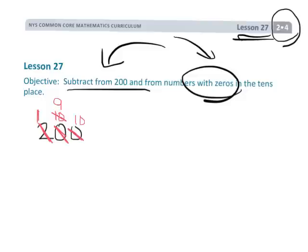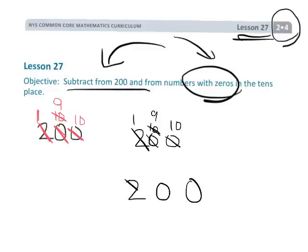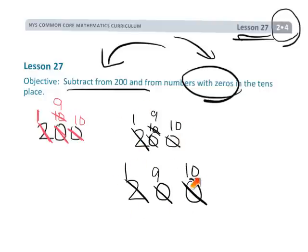Students are going to learn they can do that in two steps — unbundle, regroup, unbundle, regroup — or eventually in one step, where they go straight from unbundling the hundreds to making the tens a nine and placing a ten right in the ones. For this lesson today I'm going to use the two-step method, but students who are ready to do it in one step are welcome to.